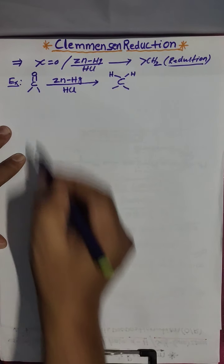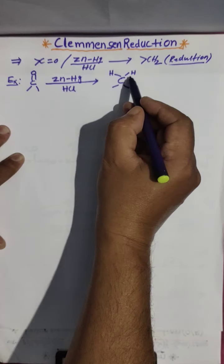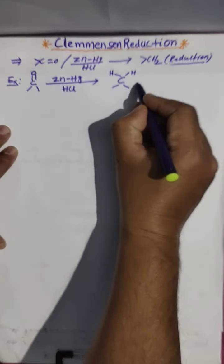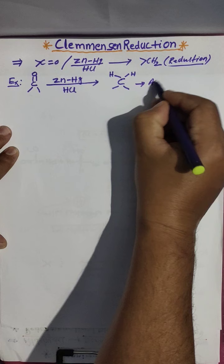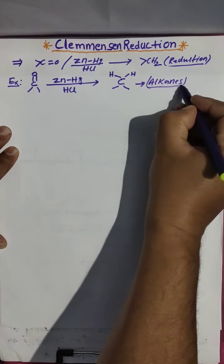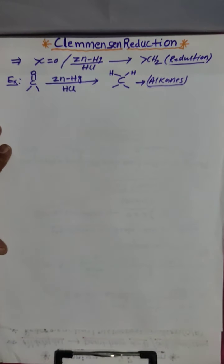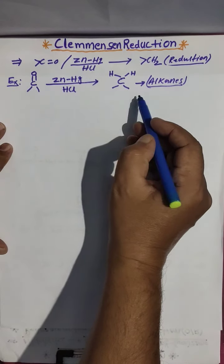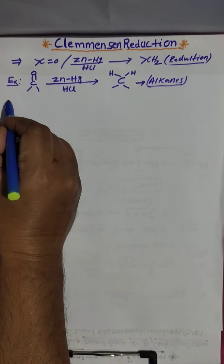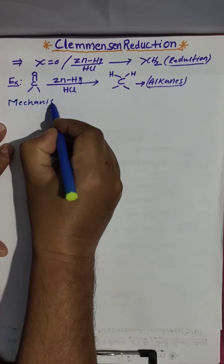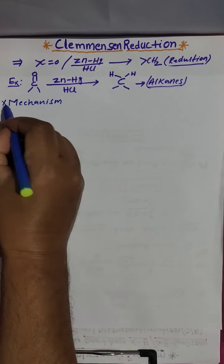Look here — this C=O double bond is reduced. Removal of oxygen and addition of hydrogen is called reduction. This aldehyde or ketone is converted to what we are calling alkanes — saturated hydrocarbons.